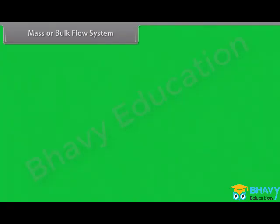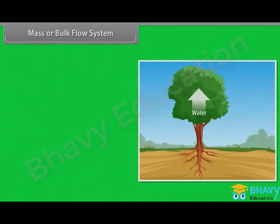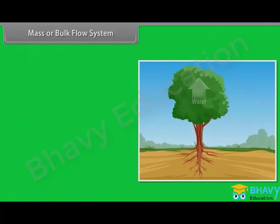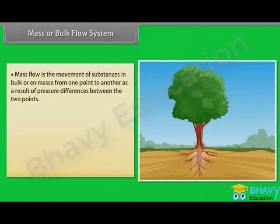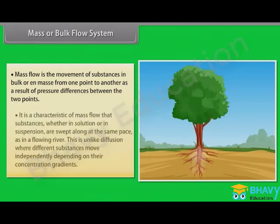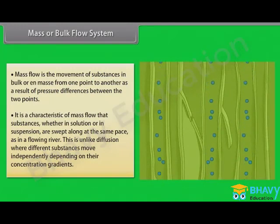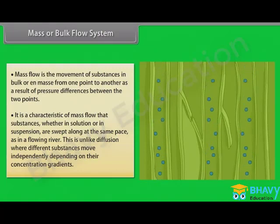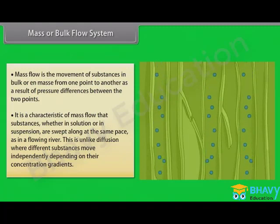In tall trees, special long distance transport systems become necessary to move substances across long distances at a much faster rate. Water, minerals, and food are generally moved by a mass or bulk flow system. Mass flow is the movement of substances in bulk or en masse from one point to another as a result of pressure differences between the two points. Substances, whether in solution or in suspension, are swept along at the same pace, as in a flowing river.